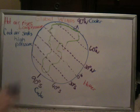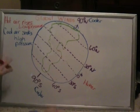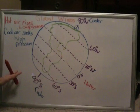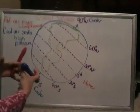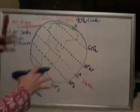This happens globally. And what air always wants to do is it wants to equal out. It doesn't like to have high pressure and low pressure. It wants to be equal. So this is why winds move.